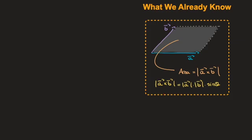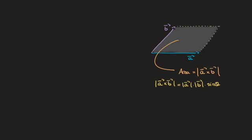Now let's show why the area of this parallelogram is equal to the magnitude of this cross product. I'll copy the parallelogram and label the sides with their lengths. The length of the blue side is equal to the magnitude of vector a, and the length of the purple side is equal to the magnitude of vector b. I'll also add that the interior angle between the two vectors a and b is called theta.